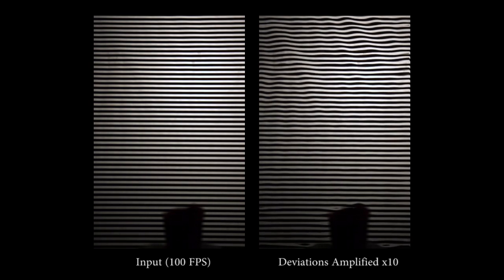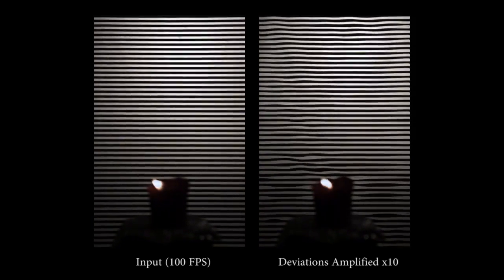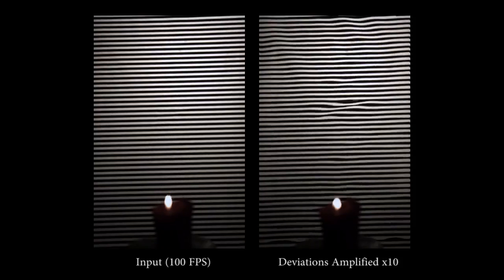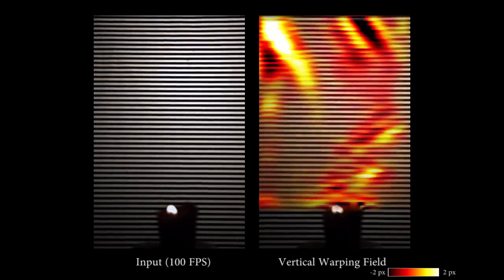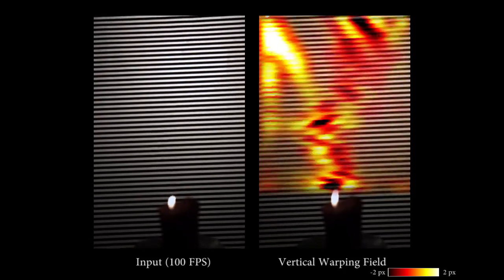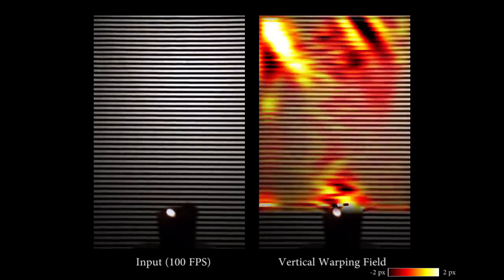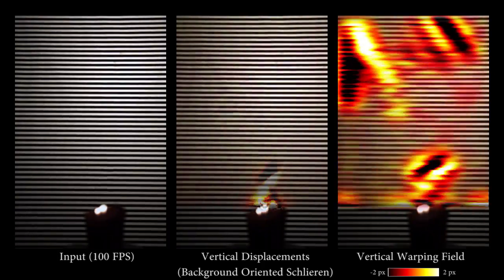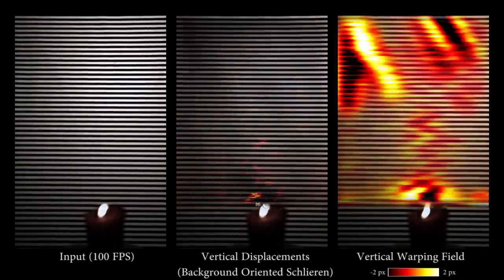We filmed a candle in front of a piece of paper with straight lines on it. We amplify the deviations from every straight line, revealing some bumps on the paper. When we light the candle, you can see distortions caused by the flame's heat changing the index of refraction. We can show the vertical component of the warping field to reveal the heated air above the flame. Since our technique only depends on geometry and not temporal changes, moving the camera doesn't affect it. In contrast, related techniques like background-oriented Schlieren look for changes in time and can't easily separate the camera's motion from the flames.